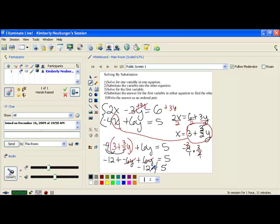Negative 12 is not equal to 5. When that happens, and you're solving in an algebraic way, which substitution is, it means something. Since this is not a true statement here, and all the variables are gone,